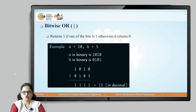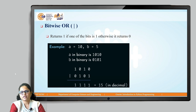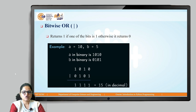Similarly, we have the bitwise OR operator. In bitwise OR, it returns 1 if at least one of the bits is 1, otherwise it returns 0. For the same numbers, performing OR: LSB pair 0 OR 1 is 1, then 1 OR 0 is 1, then 0 OR 1 is 1, then 1 OR 0 is 1. The result 1111 in binary is 15 in decimal, so 10 OR 5 gives the result 15.